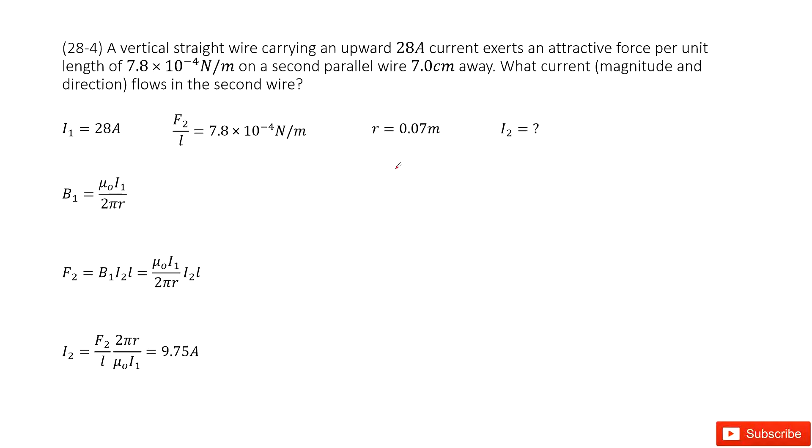Chapter 28 is about sources of magnetic fields. We can see we have two wires with an attractive force between them. We're given some quantities for the first wire, then we need to find the current on the second wire. The distance between these two wires, R, is given.